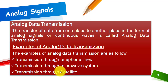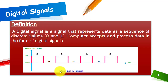The next one we have is a digital signal. It is a type of signal that operates on two numbers: zero and one. A signal that depends on the binary numbers zero and one is called a digital signal. Computers accept and process data in the form of digital signals — you can see here: 1, 0, 1, 0, 1, 0, 1, 0 — so digital signals are in the form of zeros and ones.